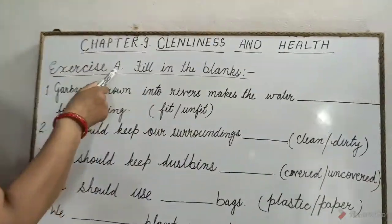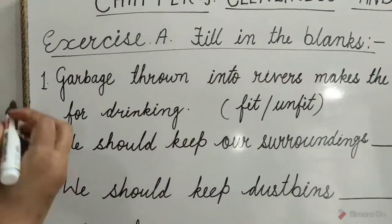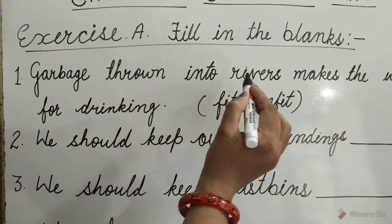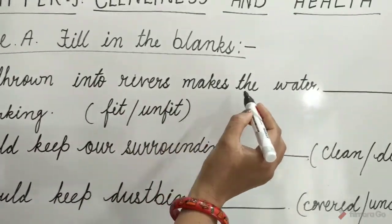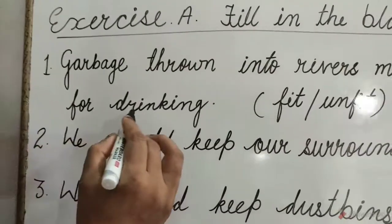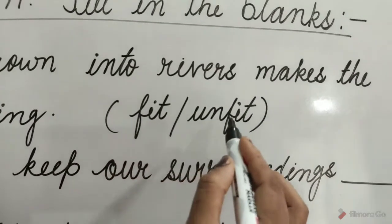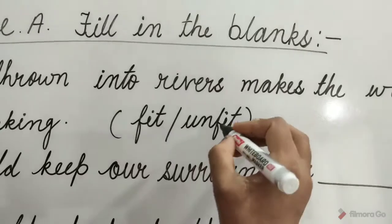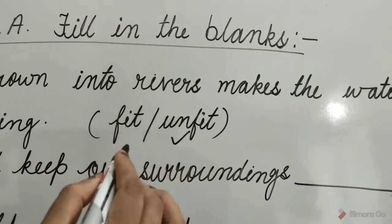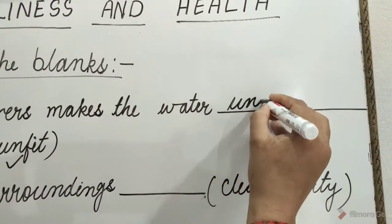Exercise A. Fill in the blanks. Question 1: Garbage thrown into rivers makes the water dash for drinking. The options are 'fit' and 'unfit'. The 'unfit' option is correct. So tick on 'unfit' and write here: unfit.